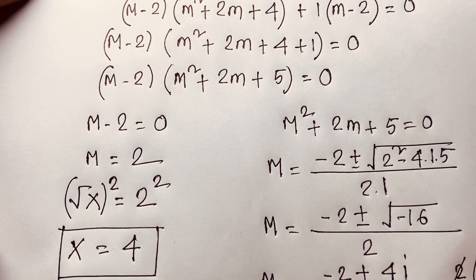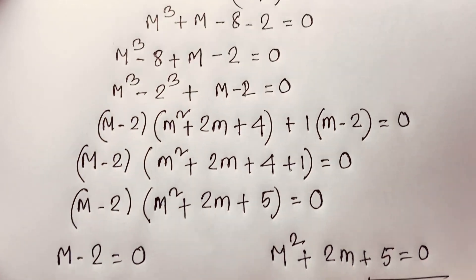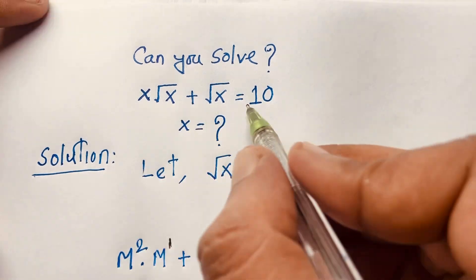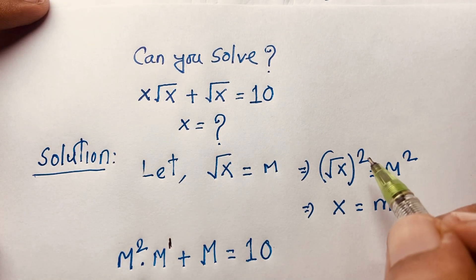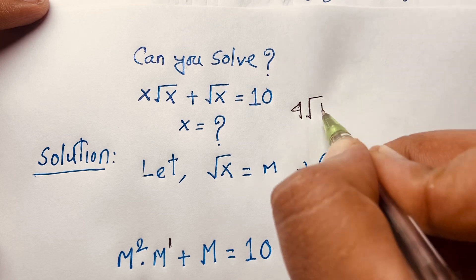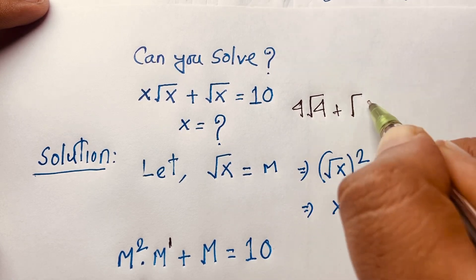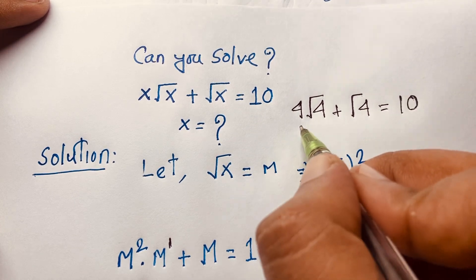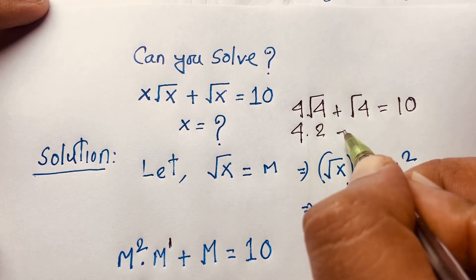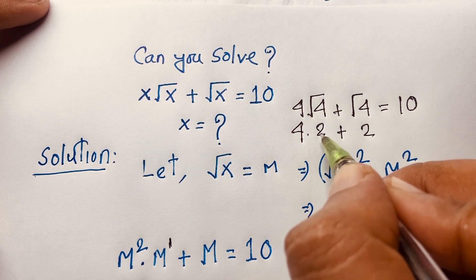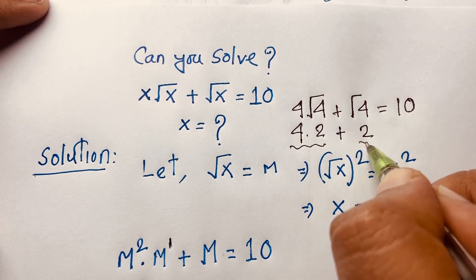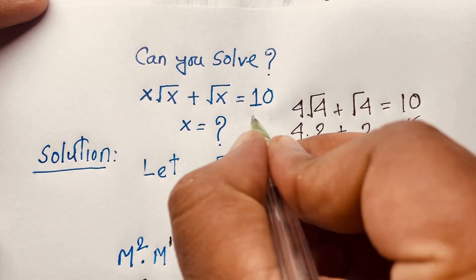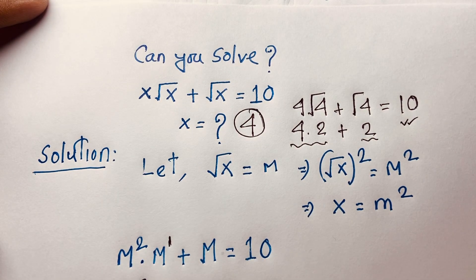Squaring both sides, x equals 4. This is our final answer. Let's verify: x times square root x plus square root x equals 10. Substituting x equals 4: 4 times square root 4 plus square root 4 equals 4 times 2 plus 2, which equals 8 plus 2, which equals 10. So x equals 4 is confirmed as our final answer to this radical math question.